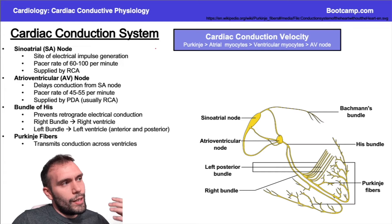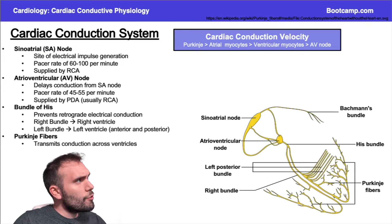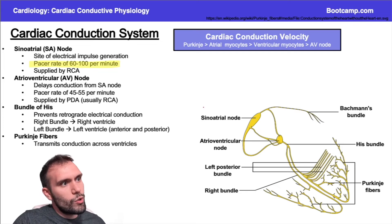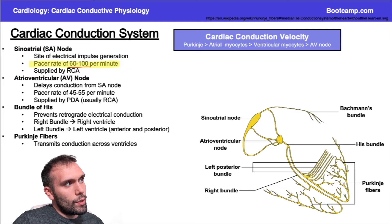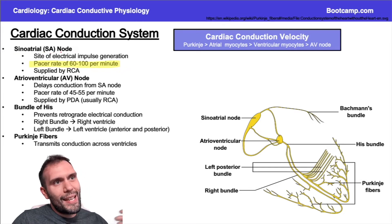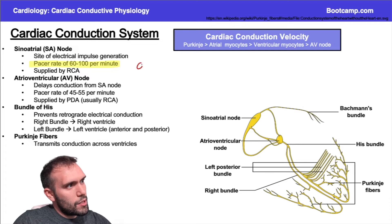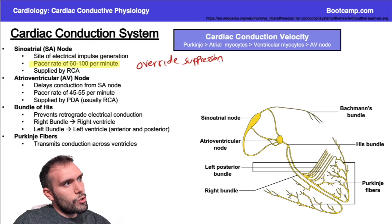So the cardiac conduction system — starting with the sinoatrial node. The sinoatrial node is where electrical impulses are normally going to be generated, at a pacer rate of about 60 to 100 per minute. The SA node is located in the right atrium. The reason the SA node is the site where impulses are generated is because it fires more rapidly than the other sites. Sometimes we call this override suppression, because it's overriding the whole system by firing so much faster than everyone else.